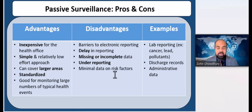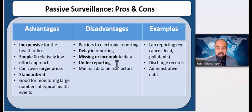Passive surveillance, although very simple, is limited by variability of quality and incompleteness in reporting, and thus is less comprehensive than active surveillance. Examples of passive surveillance include lab reporting of cancer, lead in blood, and other pollutants, as well as discharge records and administrative data.